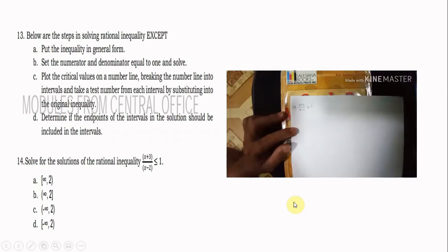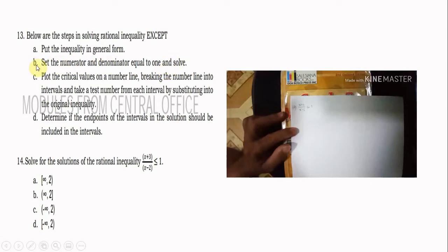Number 13: Below are the steps in solving rational inequality — except. The incorrect step is letter B: 'Set the numerator and denominator equal to 1 and solve.' This is wrong. The correct way is to set the numerator equal to 0, not 1, and also equate the denominator to 0. So letter B is the answer.